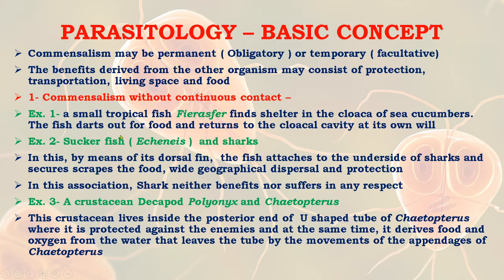Commensalism may be of two types: without continuous contact and with continuous contact. An example of commensalism without continuous contact is a small tropical fish which finds shelter in the cloaca of sea cucumbers. The fish darts out for food and returns to the cloaca cavity at its own will. Another example is sucker fish Echinus and shark.